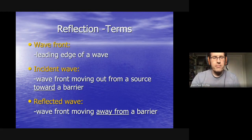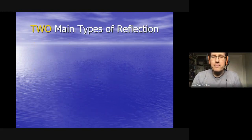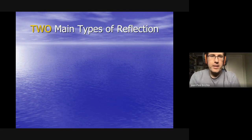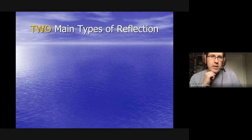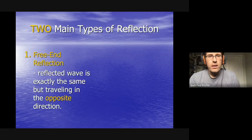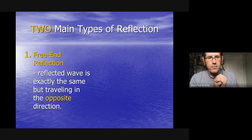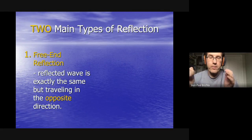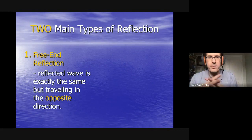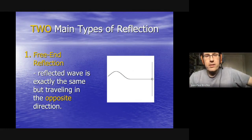There are two main types of reflection, and what differentiates them is what happens to the wave when it reaches the boundary. Think of the boundary not as a wall, but as what happens to the wave when it gets to its end. In this graphic you can see the wave, and the end of the wave is here.